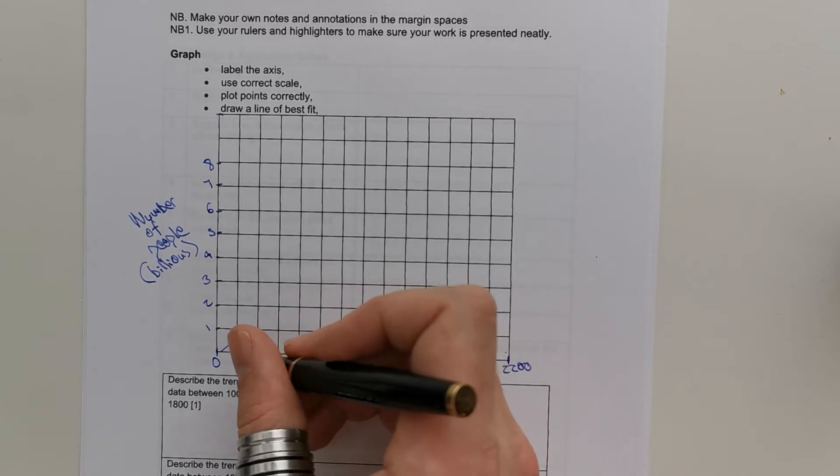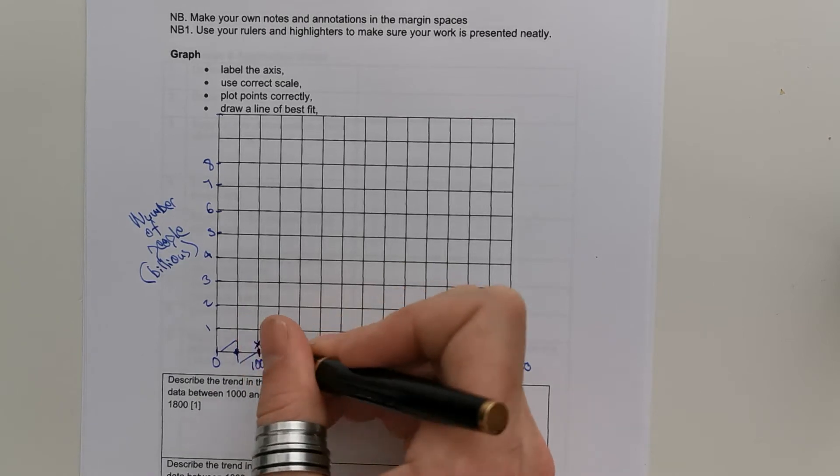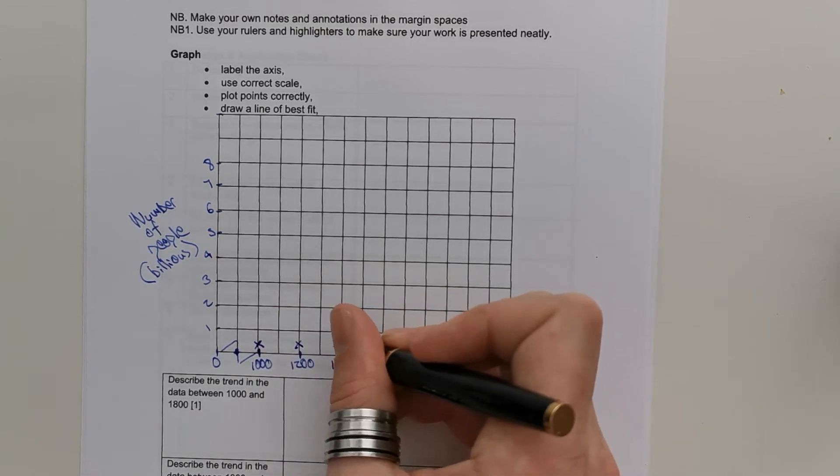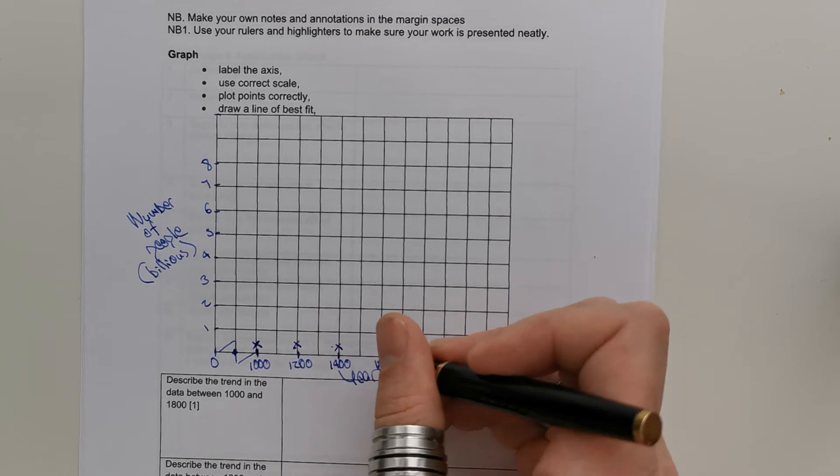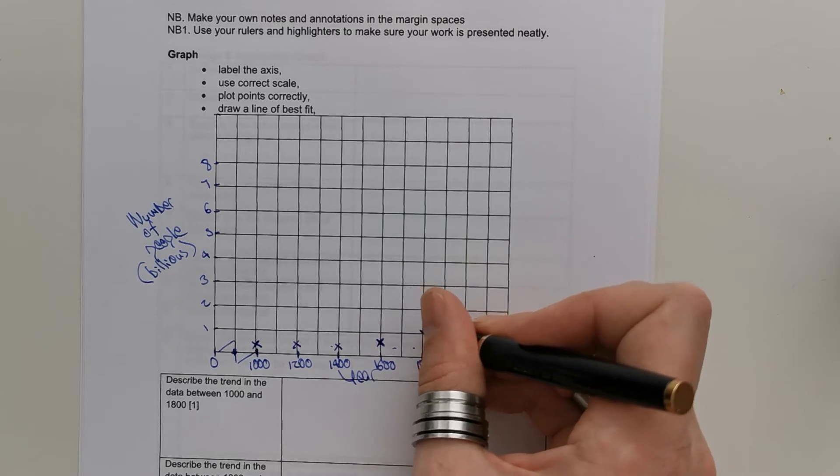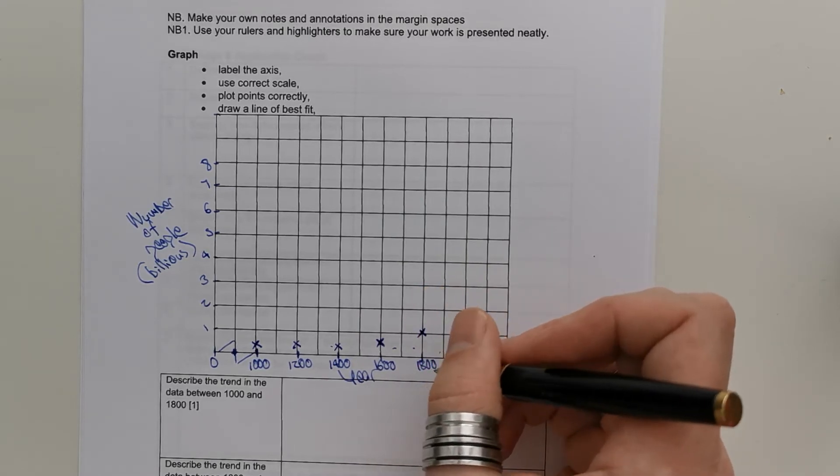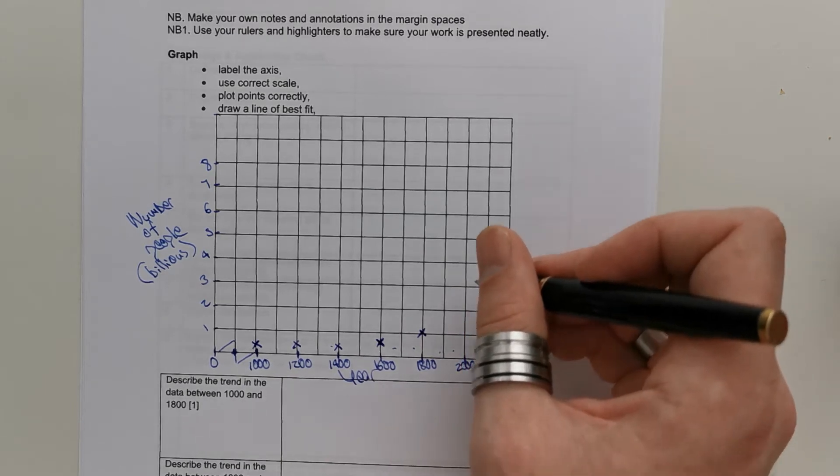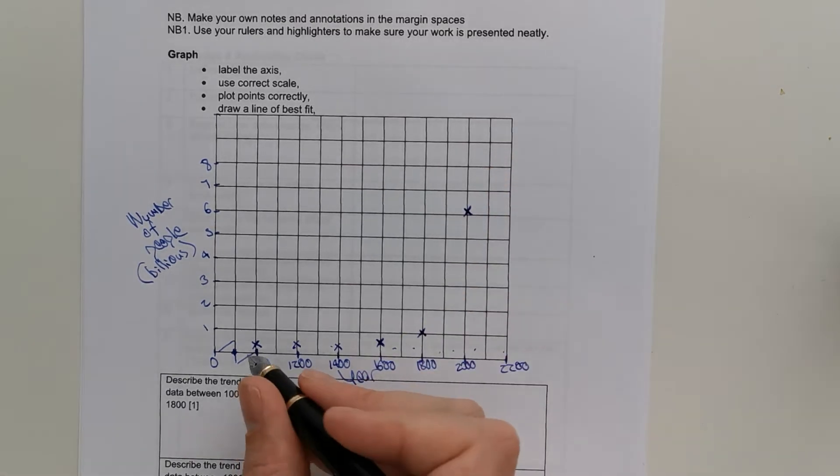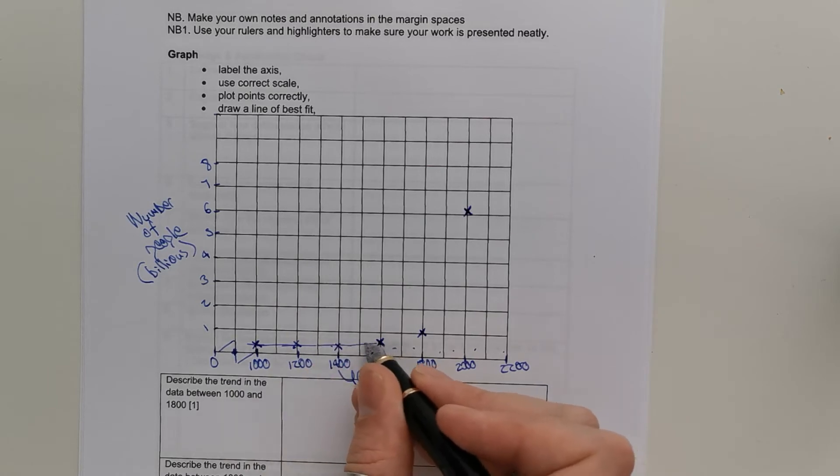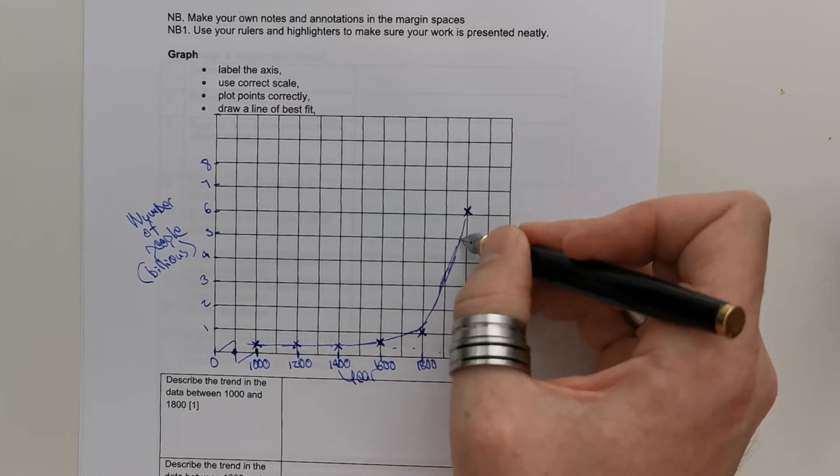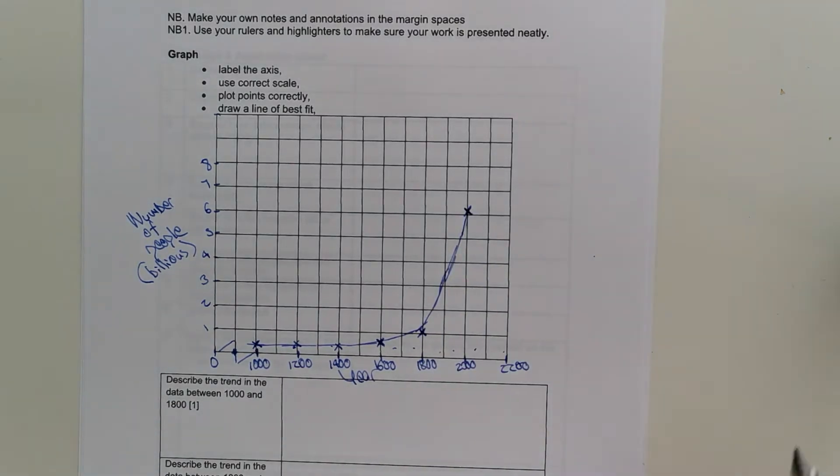So, 1,000, year 1,000 at 0.3. Not much change for year 1,200, 1,400, about the same. 1,600, we get up to about halfway. 1,800, we get up to about a billion. And then the year 2,000, we get up to just over 6 billion. Now, we should hopefully have a pencil that you draw the line of best fit. And as you can see, in science, that line of best fit can be straight or curved. And a curved line of best fit would be most appropriate here, like so. So, we've got a basic graph.